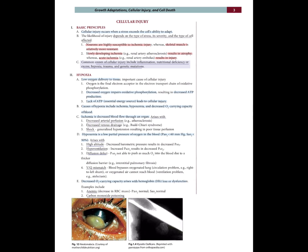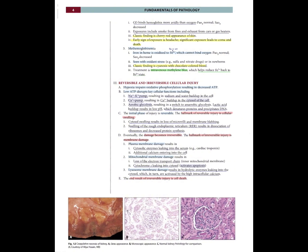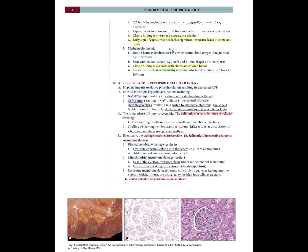Decreased oxygen-carrying capacity arises with hemoglobin loss or dysfunction. Anemia (decreased RBC mass): pO2 normal, SaO2 normal. Carbon monoxide poisoning: CO binds hemoglobin more avidly than oxygen; pO2 normal, SaO2 decreased. Exposure includes smoke from fires and exhaust from cars or gas heaters. Classic finding is cherry red appearance of skin; early sign is headache; significant exposure leads to coma and death. Methemoglobinemia: iron in heme is oxidized to ferric ion, which cannot bind oxygen; pO2 normal, SaO2 decreased. Seen with oxidant stress — e.g., sulfa and nitrate drugs or in newborns. Classic finding is cyanosis with chocolate-colored blood. Treatment is intravenous methylene blue, which helps reduce iron back to ferrous state.